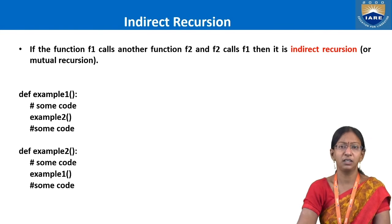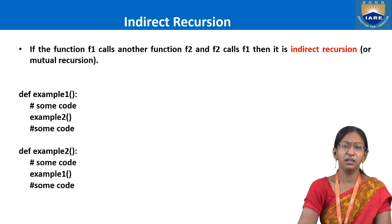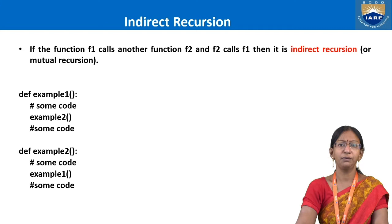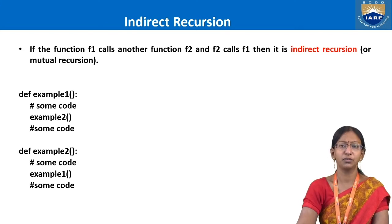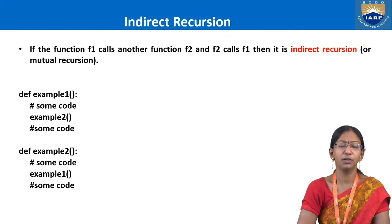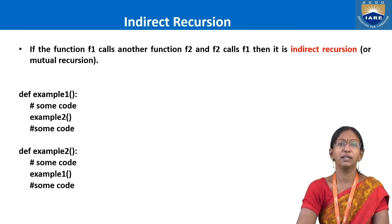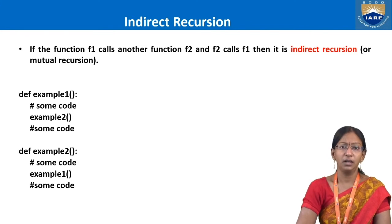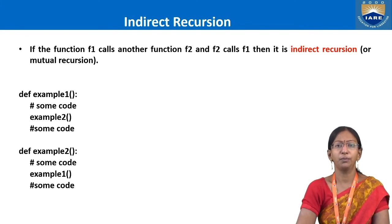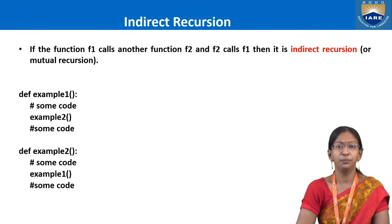Even in indirect recursion, either f1 or f2 must have a breaking point to break this chain. These are the two kinds of recursions we encounter in solving any problem or writing any algorithm. Both are adoptable.